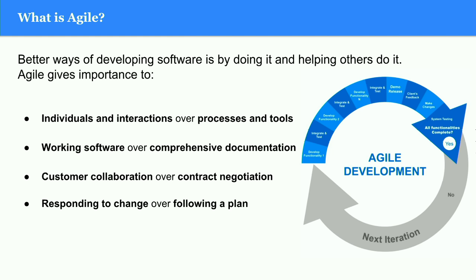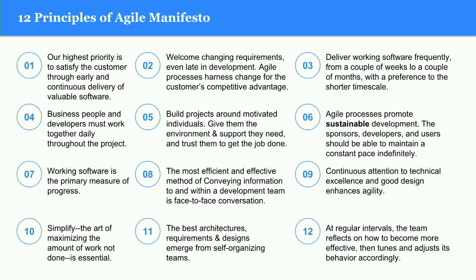So, what is agile? As you all know, agile brings more flexibility. It gives witness to individuals and interactions over processes and tools, working software over comprehensive documentation, customer collaboration over contract negotiation, and responding to change as soon as possible. Here are the 12 principles of the Agile Manifesto — it is more about flexibility, team collaboration, sustainability, and MVP — minimum viable product — instead of documentation only.